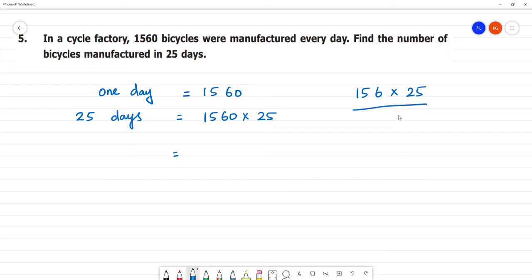So 6 times 5 is 30, remainder 3. 5 times 5 is 25, plus 3 is 28, remainder 2. 1 times 5 is 5, plus 2 is 7. Next, 6 times 2 is 12, remainder 1. 5 times 2 is 10, plus 1 is 11. 1 times 2 is 2, plus 1 is 3. So we get 0, 0, 9, 3, 39,000.